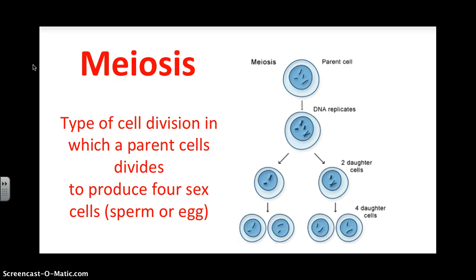For instance, all of your skin cells have 46 chromosomes, but if you're female, your egg cells only have 23 chromosomes, and if you're male, your sperm cells only have 23 chromosomes. So 23 is obviously half of 46.